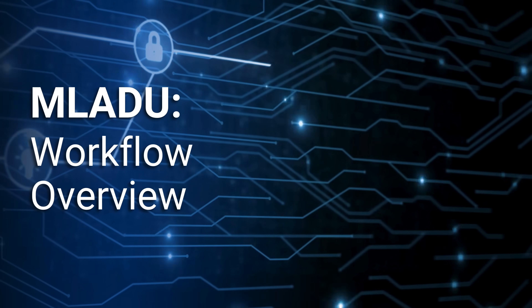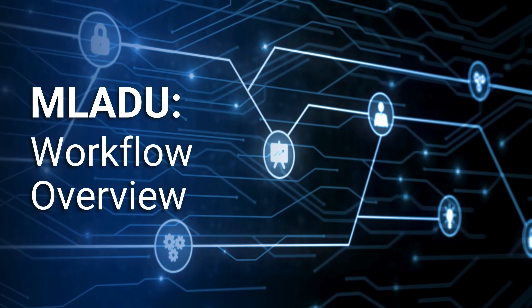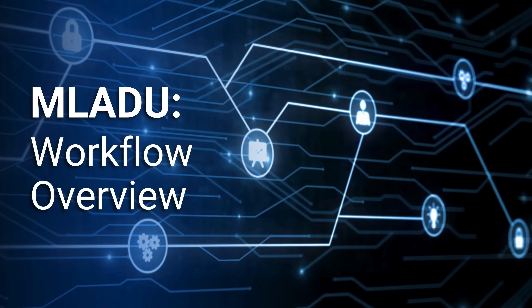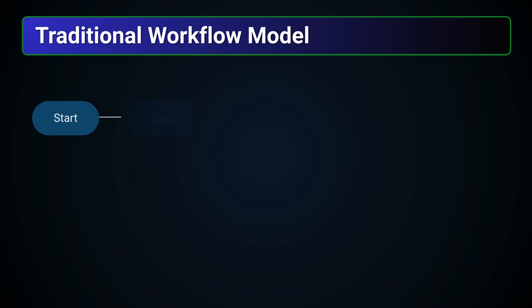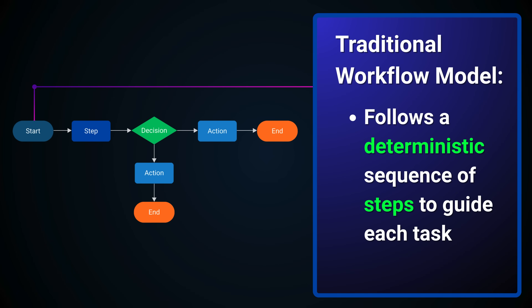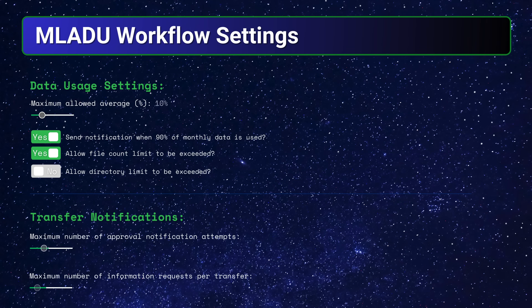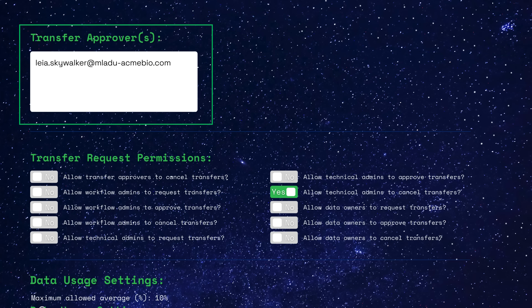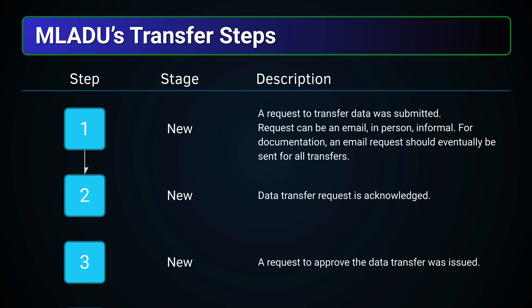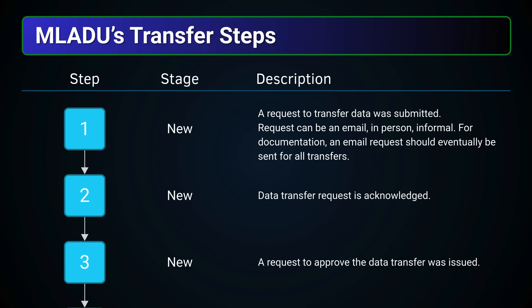In this video, we will explore how Maladu's workflow ensures that every data transfer is handled securely and consistently through a structured and controlled process. Maladu's core data transfer process is built on the traditional workflow model, which follows a deterministic sequence of steps to guide each task. While organizations can configure the process steps occurring before and after a transfer, such as approval requirements, Maladu's underlying data transfer process progresses through a fixed set of clearly defined stages, allowing users to easily track its status at any time.